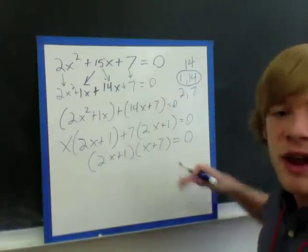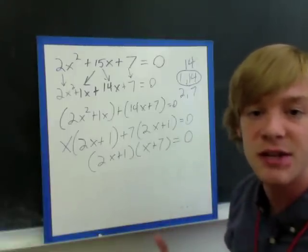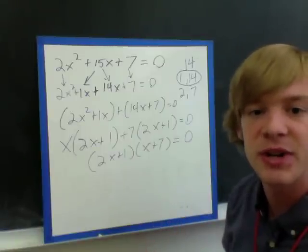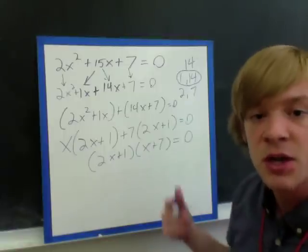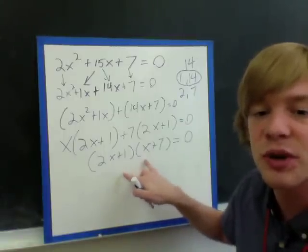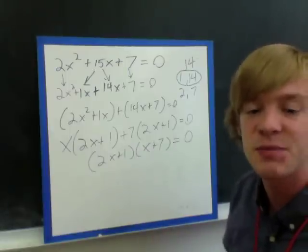Up until here, everything we've been doing has been the same as it has been in class so far. Now, this is the part that's a little bit different, but this is also very easy compared to what you've just done. So what we're going to do is we're going to take these two and set each one equal to 0. So I'm going to have 2x plus 1 equals 0, and then I'm going to have x plus 7 equals 0.